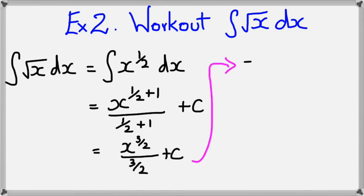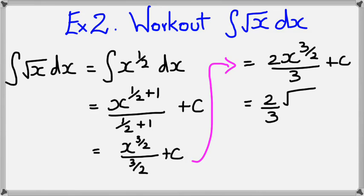And going on a bit further with this, simplifying it further, I would get 2x to the power of 3 over 2 divided by 3 plus c. You could have actually really stopped at the second line, but I'm just showing how to simplify it further on. There is one more step you could actually do, and that is bringing the square root symbol back in.